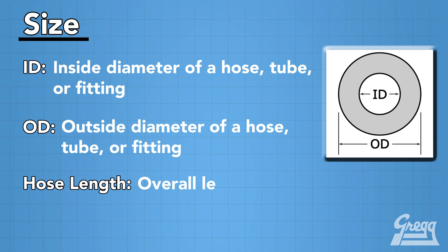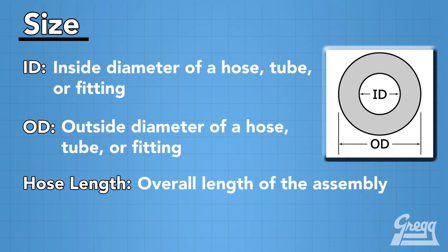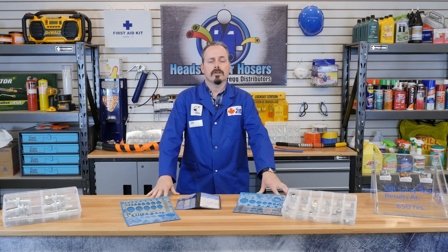Hose length is also an important factor and this can determine the overall length of the hose assembly. The reason why this is important is because under pressure the hose length will change due to tolerances.